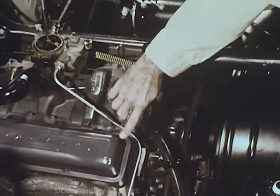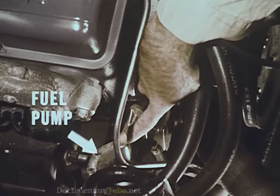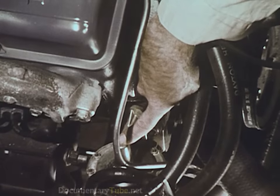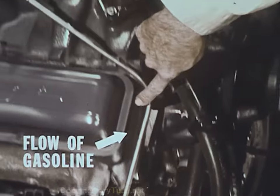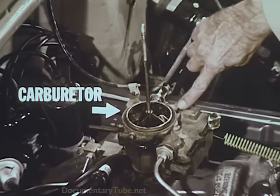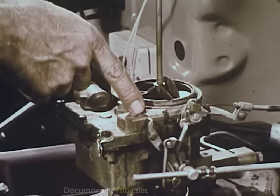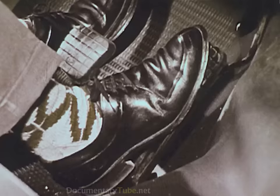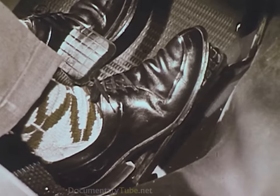Here on an actual engine are the counterparts of the fuel system just diagrammed. The fuel pump, the fuel line from pump to carburetor, and the carburetor itself with its air cleaner removed. Here is the linkage connecting the carburetor to the accelerator pedal.